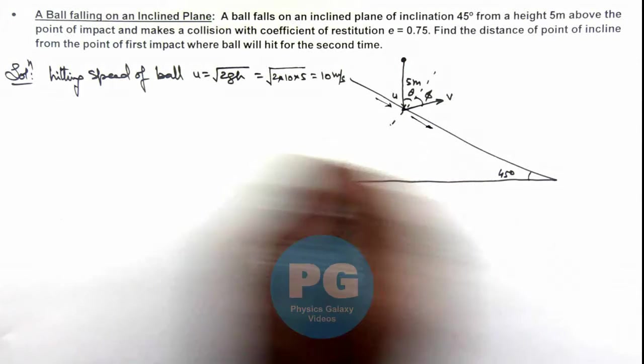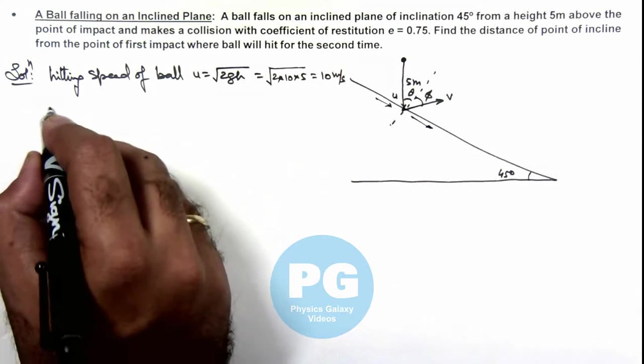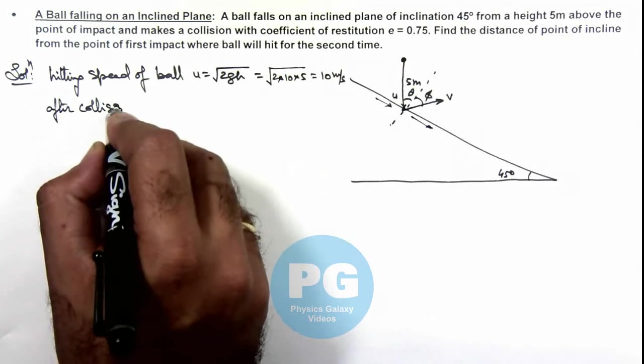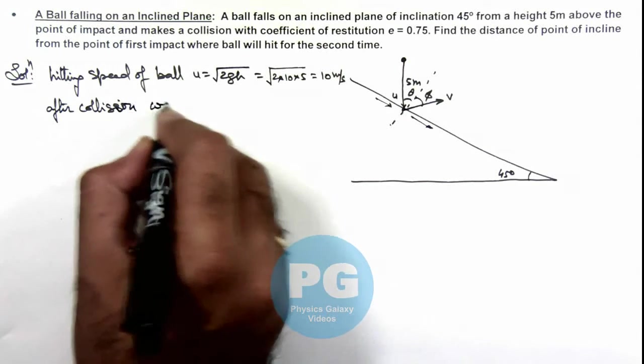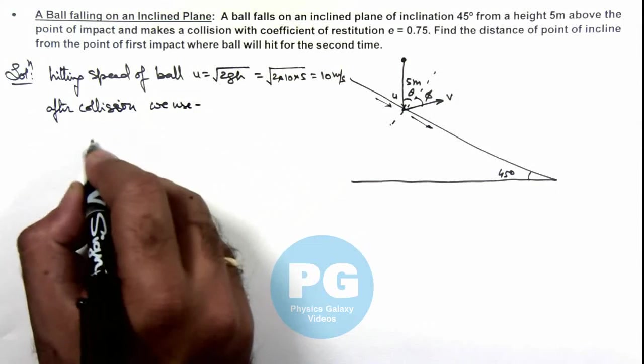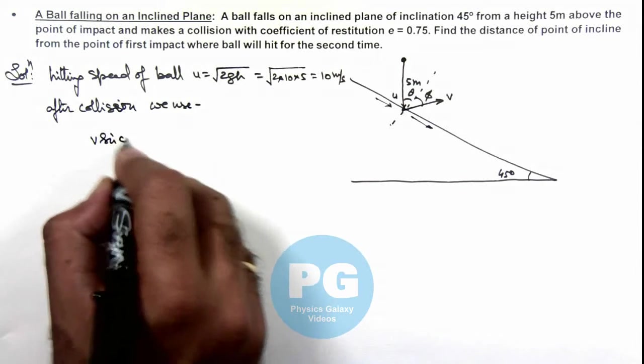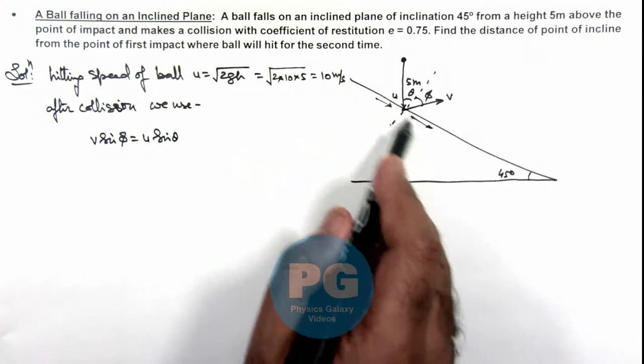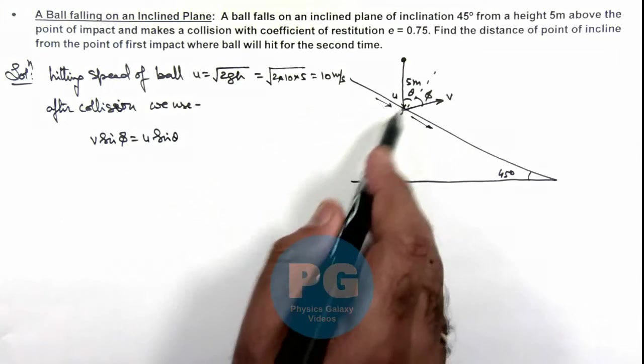After collision, we use v sin φ = u sin θ, as along the incline no force is acting on it since friction is absent.